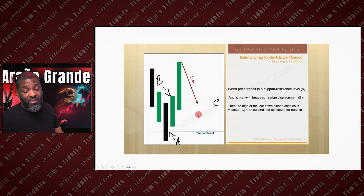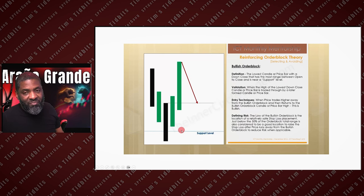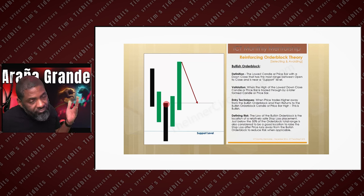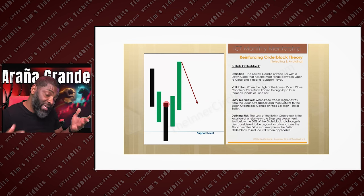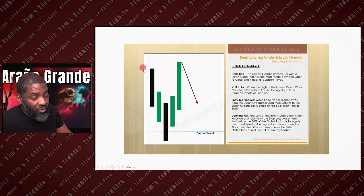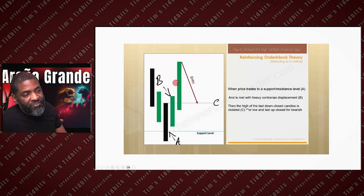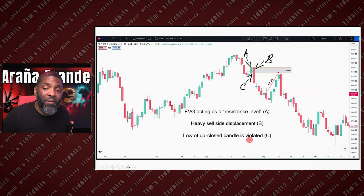Here's what a bullish order block looks like without the labels. Note that these candles don't have wicks shown, but you should consider them. Some traders only trade the bodies because 'wicks do the damage, bodies tell the story.' Personally, if it's a super long wick I may exclude it; a small wick I may include. Price comes down to support, heavy contrarian displacement occurs, the high of the last down-close candle is violated — there's your order block. When price trades back to it, that's your entry.